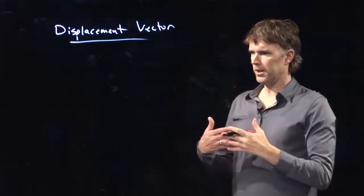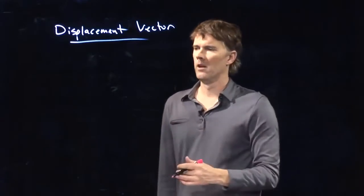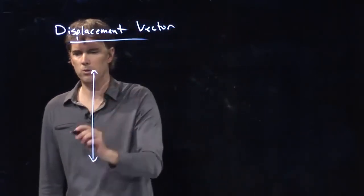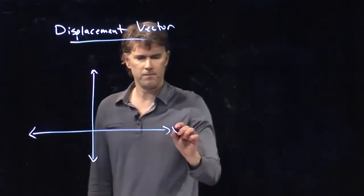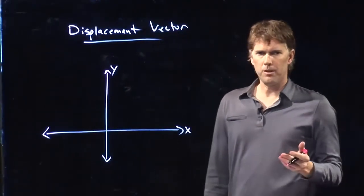So what do we mean by displacement? Displacement is moving from one location to another. If you think about moving in a two-coordinate system, x and y, a two-dimensional system, we need to know a couple things.